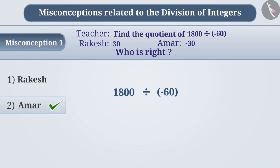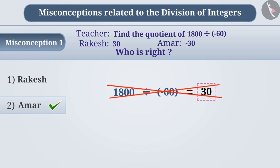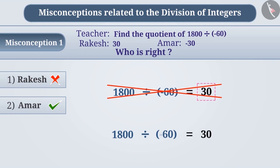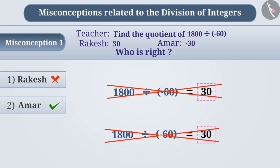Some children understand that in division of integers with two different signs, the quotient is given the sign of the larger number. Therefore, they believe the quotient of 1800 divided by minus 60 to be positive integer 30. This is a misconception — Rakesh has given the wrong answer. Some children ignore the minus sign of the denominator while dividing and believe the result to be positive. Due to these misconceptions, the answer of 1800 divided by minus 60 is given as positive integer 30, which is a wrong answer.